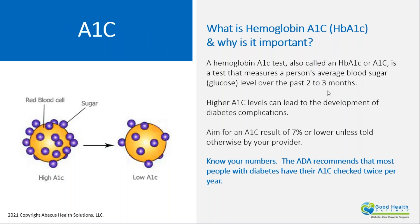Starting at the top of the list: A1C. The A1C is an essential blood test used in the formulation and modification of your diabetes treatment plan. It is used to monitor and evaluate how well your diabetes treatment plan is working. The A1C is an average of your blood glucose over a two to three month period of time, and the higher the A1C, the greater the risk of developing complications.